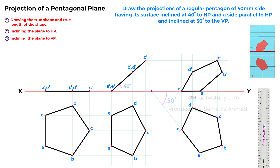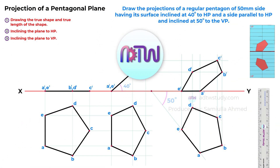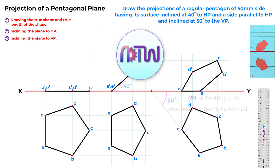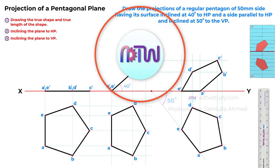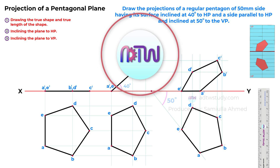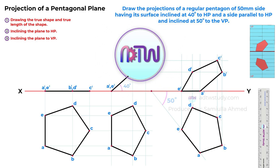This completes the process of drawing the plane inclined to both the HP and VP. I trust this video has provided clarity on how to draw a plane inclined to both the HP and VP. This same principle can be applied to all other shapes as well. If you found this video helpful, please click on the like button, and if you're new to my channel ADTW Study, don't forget to subscribe for more content. If you're interested in joining my complete course on engineering drawing, you can visit my website at adtwstudy.com. Thank you for watching.